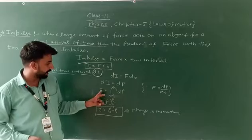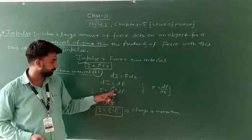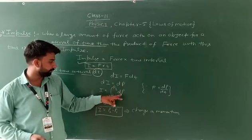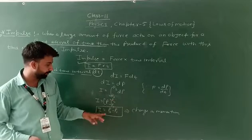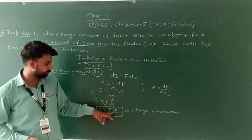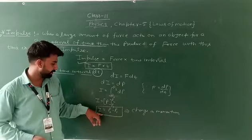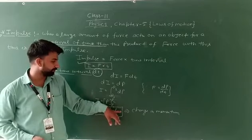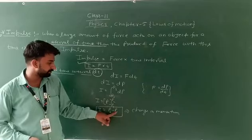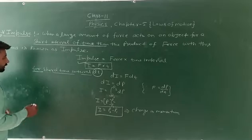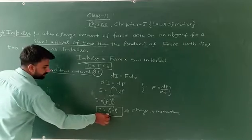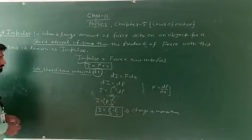From integration of dp, we take limits lower limit p1 and upper limit p2, so I is equals to p2 minus p1. This means change in momentum, final momentum minus initial momentum, so impulse can also be written as change in momentum. Clear?